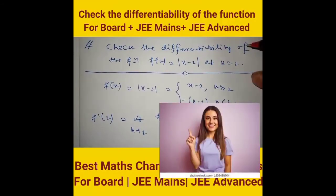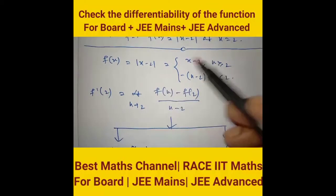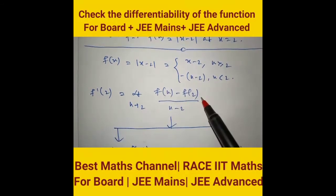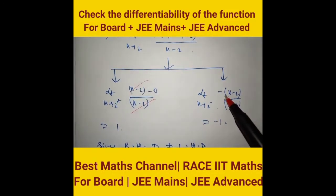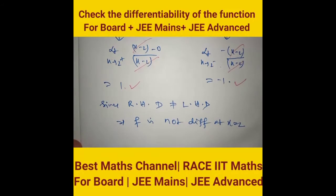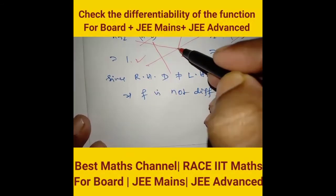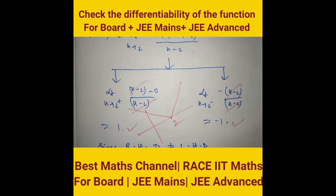Check the differentiability of f(x) = |x − 2| at x = 2. f'(2) = limit as x → 2 of [f(x) − f(2)] / (x − 2). For mod functions, find right-hand and left-hand derivatives separately. Right-hand derivative: (x − 2)/(x − 2) = 1. Left-hand derivative: −(x − 2)/(x − 2) = −1. Since RHD ≠ LHD, f is not differentiable. Geometrically, there is a corner point at x = 2.